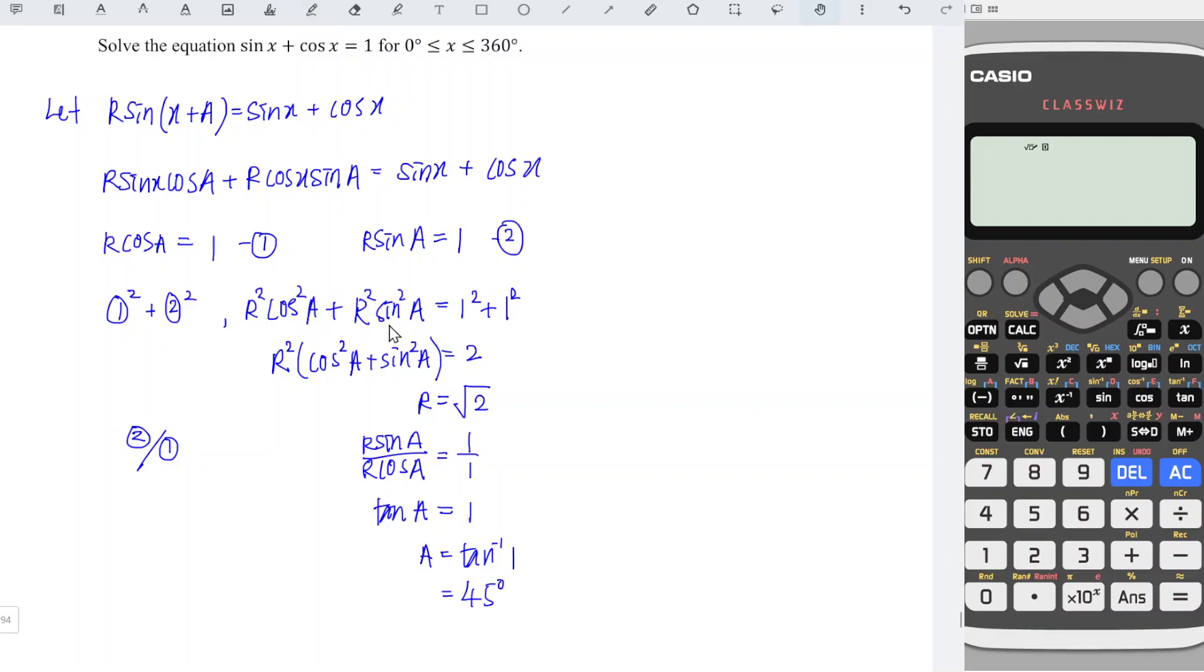Double check this: Since R cos a is positive, R sin a is positive, and tan a is positive, the angle a must be an acute angle. Recall 'all sin tan cos' - only the first quadrant has all trigonometric ratios positive. So we have 45 degrees.